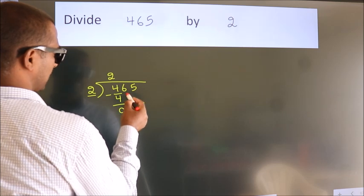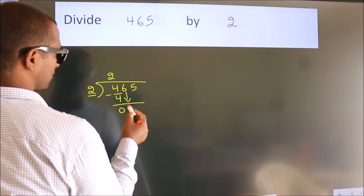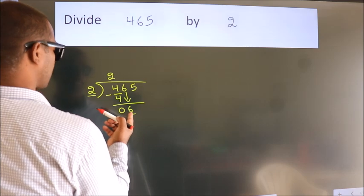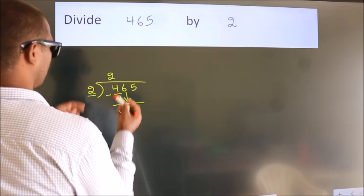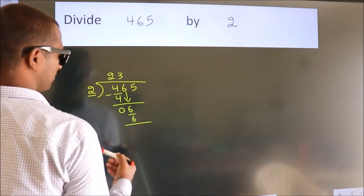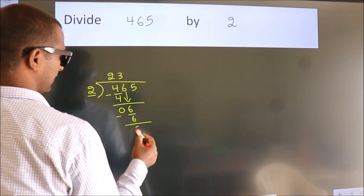After this, bring down the beside number. So, 6 down. So, 6. When do we get 6? In 2 table. 2 3's, 6. Now, we subtract. We get 0.